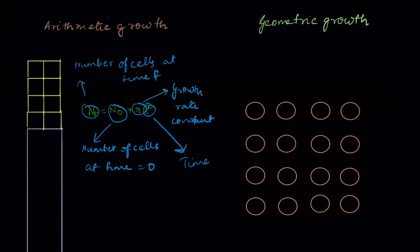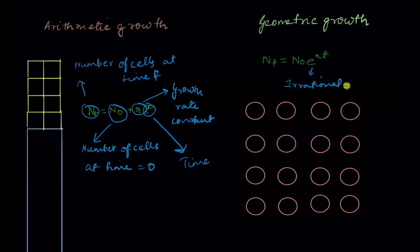In geometric growth the formula is: Nt = N0 · e^(rt). Nt and N0 are the same as before; r is again the growth rate constant and t is time. The new element is e, which is not in the arithmetic growth formula. e is an irrational constant — a very important number in mathematics used in many calculations — and its value is approximately 2.718. Because we have an exponent, geometric growth is also called exponential growth.